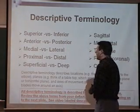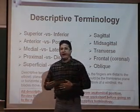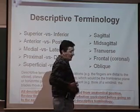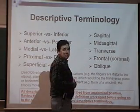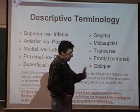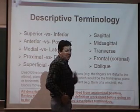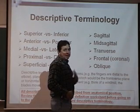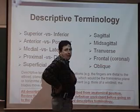The second one is anterior and posterior. Anterior — if you're looking at me from the side — anterior is toward the front. So my left hand is anterior to my chest right now. Anterior is toward the front. Posterior is toward the back.